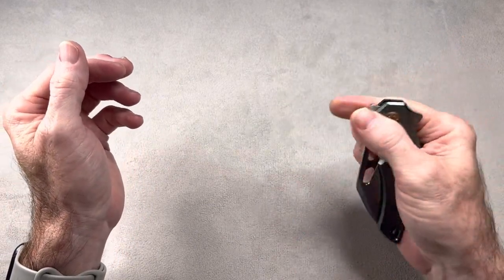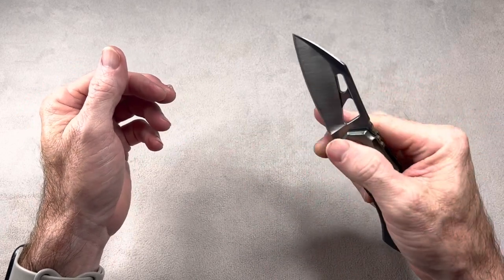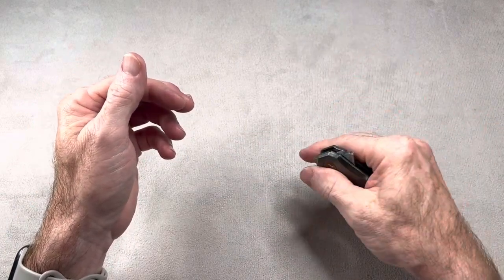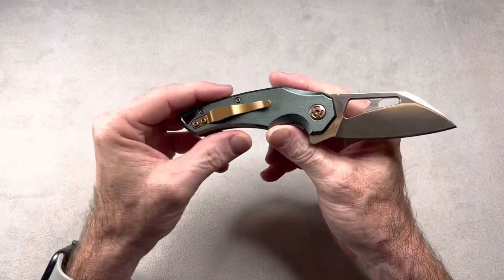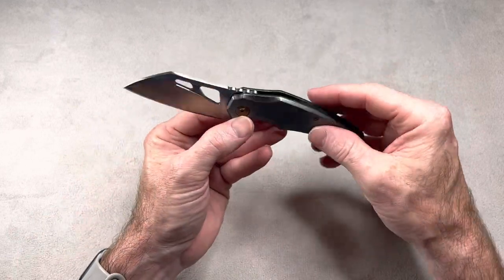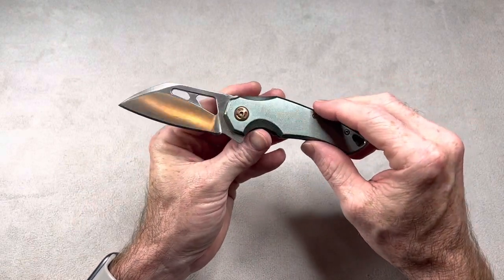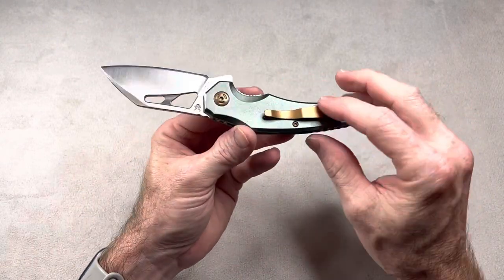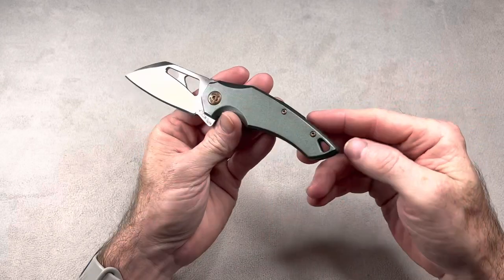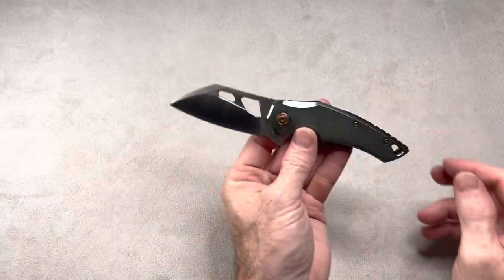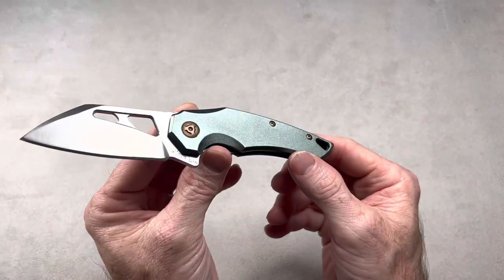This knife runs about 50 bucks, although you can catch them on sale sometimes for around 36, 37 dollars. Regular price is 49.99. It is 8Cr13MoV blade steel. These scales are aluminum, they've been anodized this green color, but there are a couple other variations. The hardware is stainless steel and it has like a gold bronzy ano on it. Stainless steel liners, stainless steel hardware, G10 backspacer. Good looking knife in my opinion.